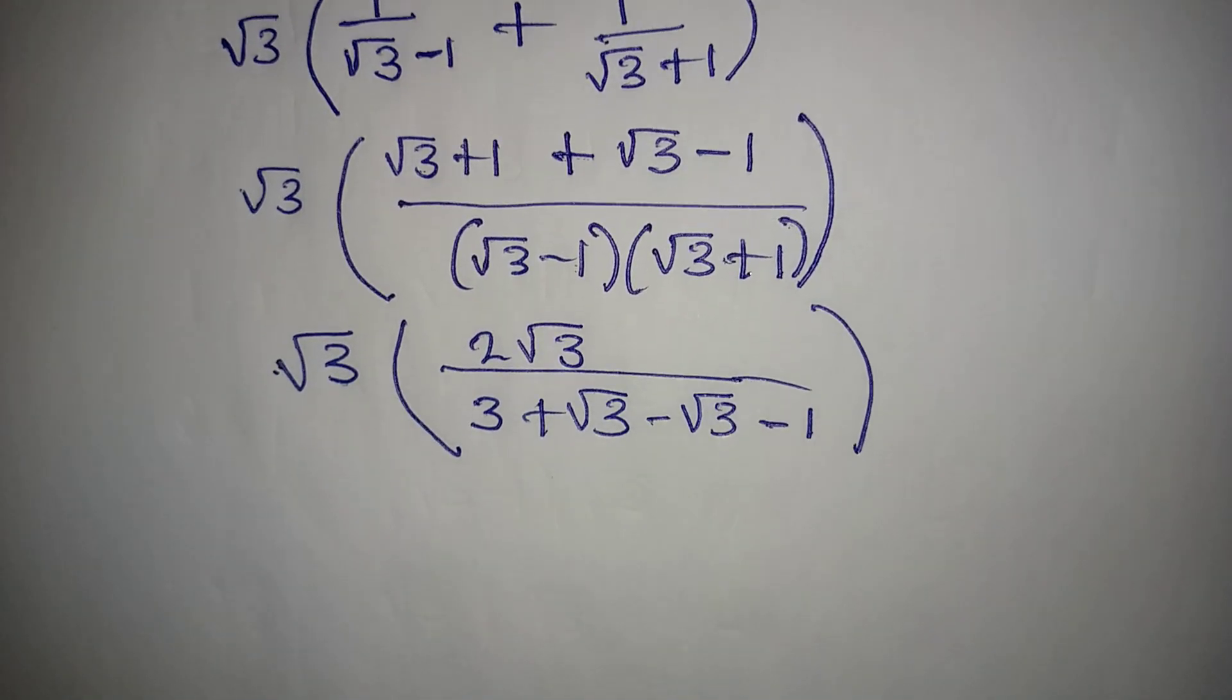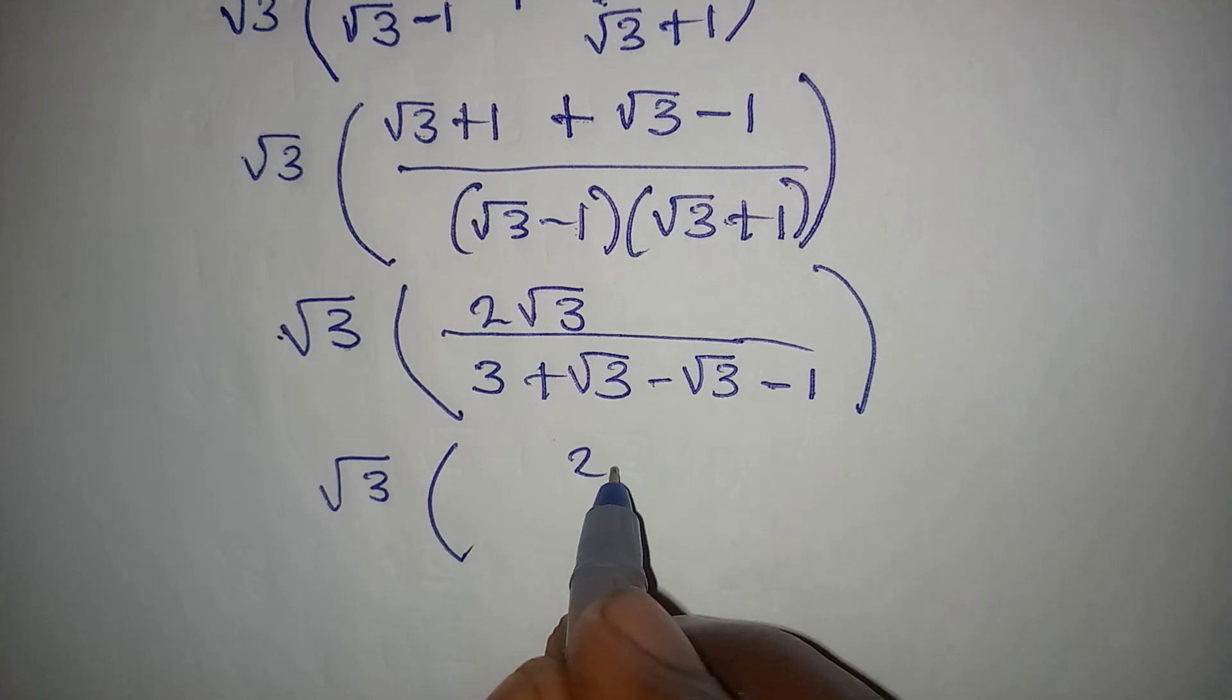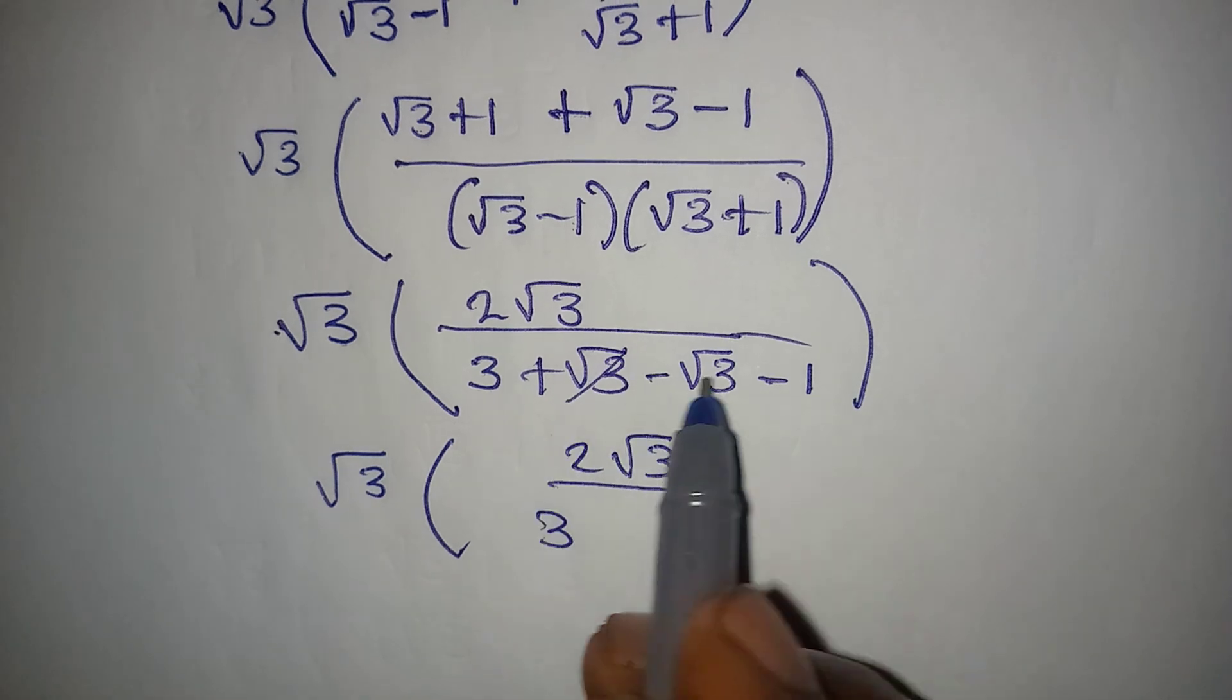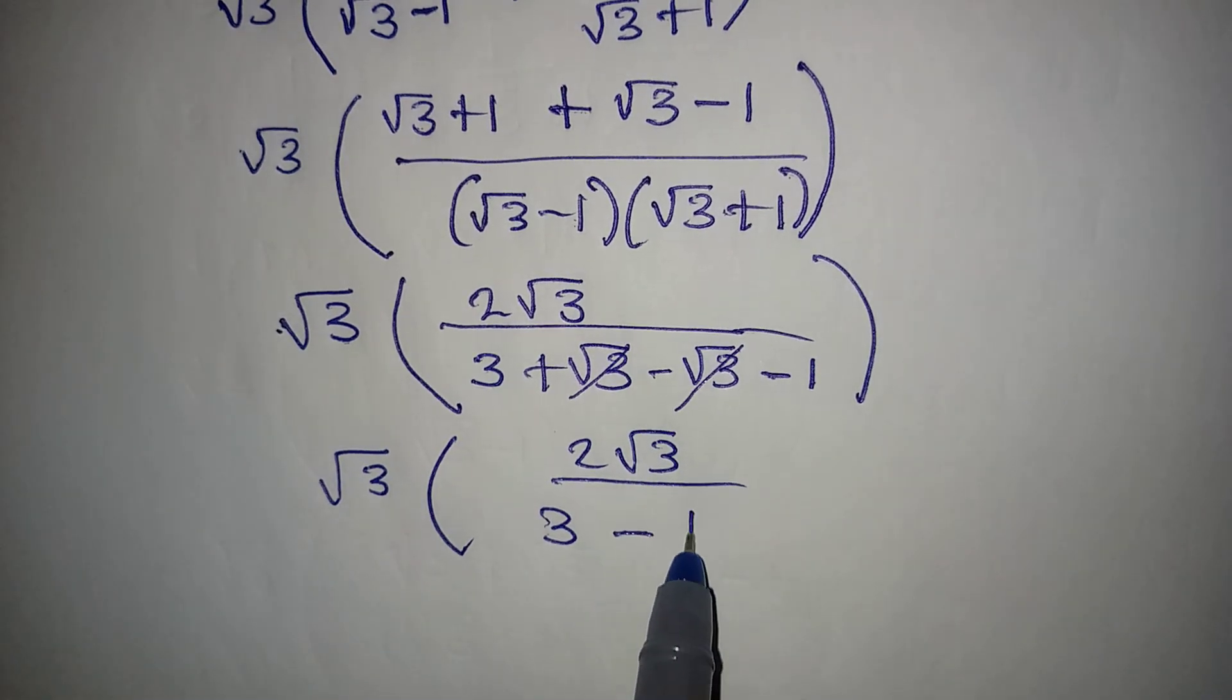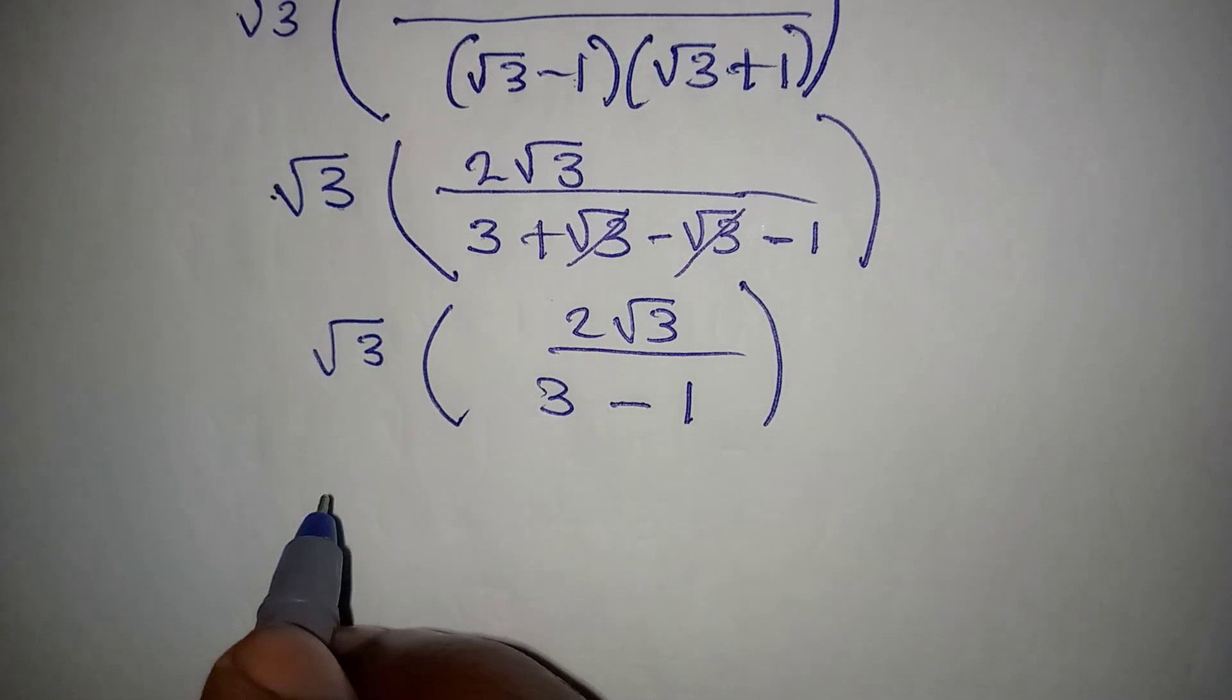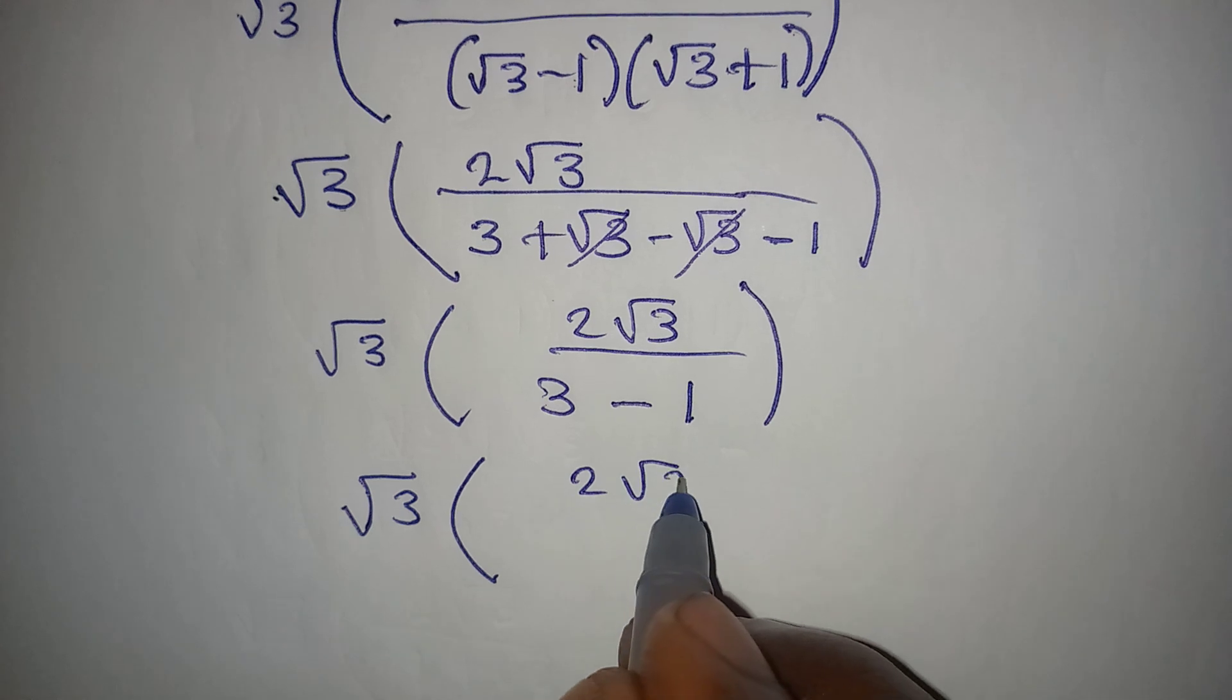To go ahead, we have root 3 into root 3 into 2 root 3 over we have 3. This and this will be gone and we have minus 1. Then we have root 3 into 2 root 3 over 2.